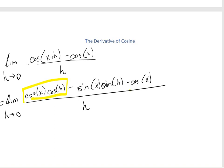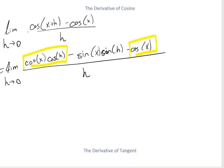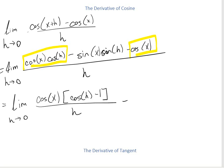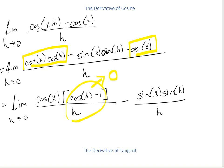Notice that the cosine x cosine h term and the minus cosine x term both have a cosine x in common, so I can factor that out. That gives me the limit as h approaches 0 of cosine of x times (cosine of h minus 1) over h, minus sine x times sine h over h. This piece goes to 0 as h approaches 0, and sine of h over h goes to 1. Don't forget that negative — so this whole thing gives us negative sine of x. The derivative of cosine is negative sine.